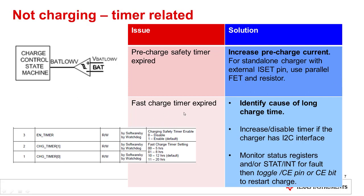Your fast charge timer can also expire. First and foremost, you want to identify the cause of that long charge time, because if there is a bad battery or similar issue, the battery could overheat and create safety problems. Once you've identified the cause, you can increase or disable the timer if the charger has an I2C interface. You also want to monitor the status of the registers and the STAT/INT pins for a fault. When you find the fault, you can toggle the CE pin or CE bit to restart the charge.